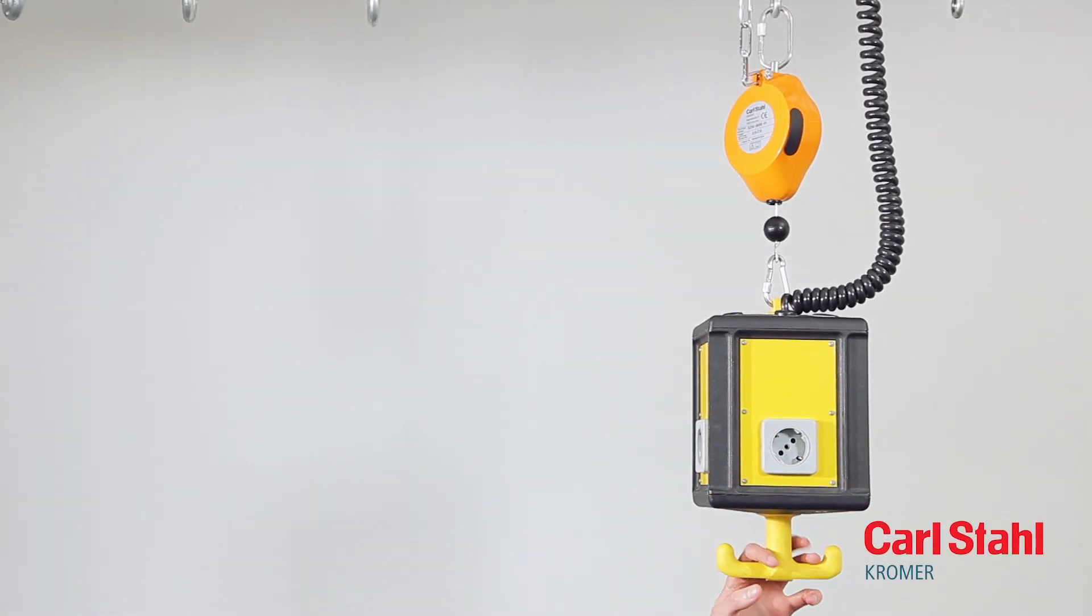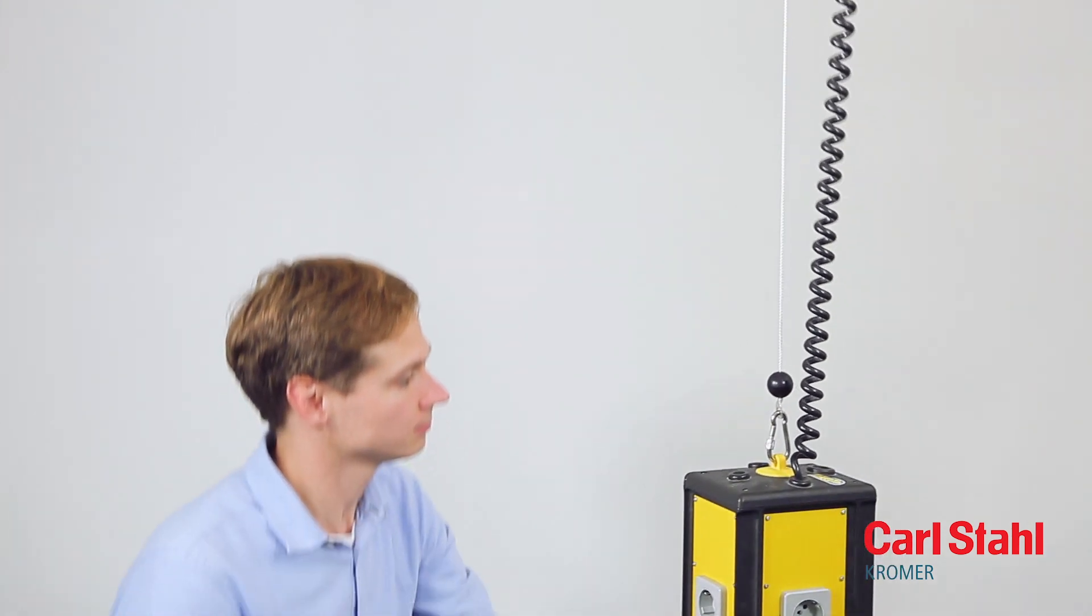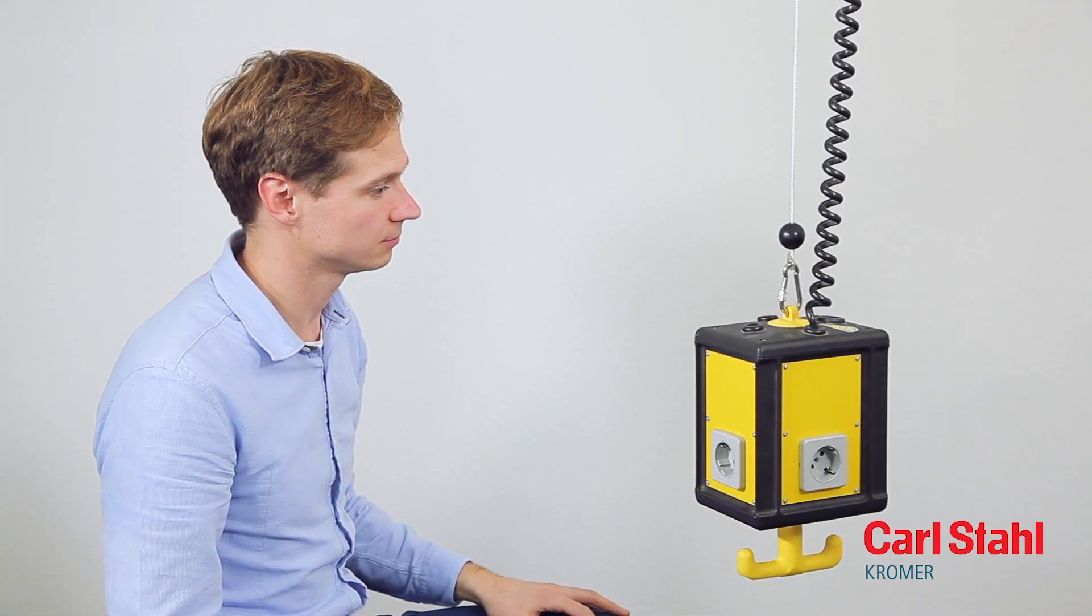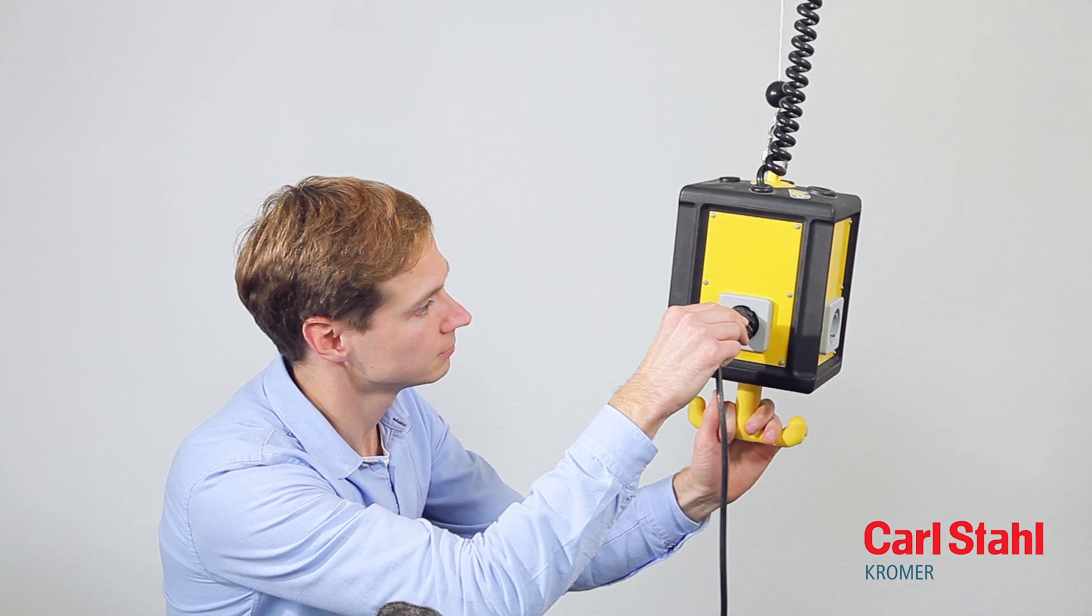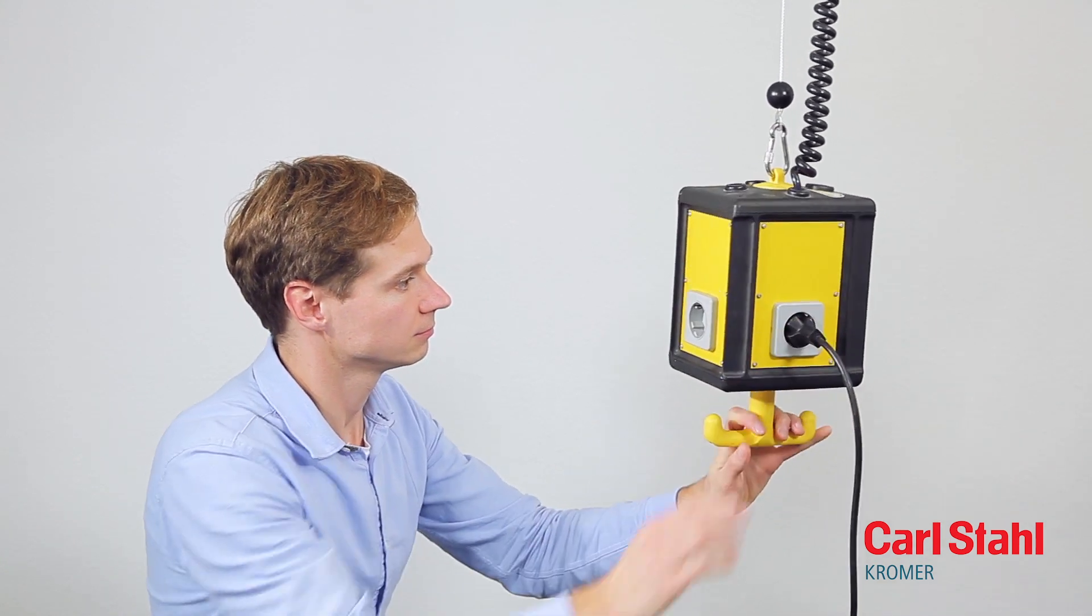The positioner type 5250 serves to keep energy supply units ready for use in the intended position. Positioning the suspended supply unit at the desired height is extremely easy. Even if the load weight changes, the 5250 reliably maintains the chosen position.